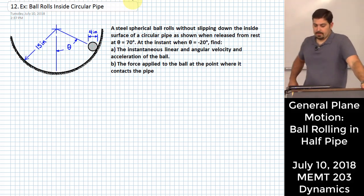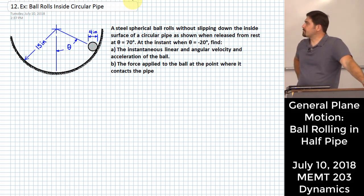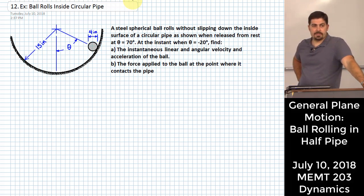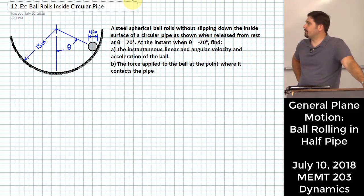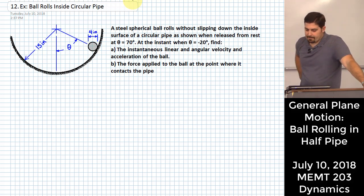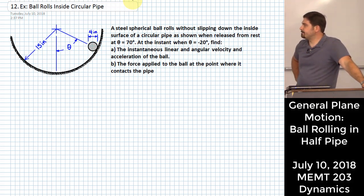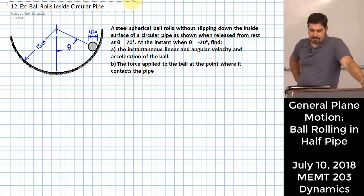We have a steel spherical ball rolling inside a half pipe without slipping. It's released from rest at a position described by angle theta, rolls down past center, and back up on the other side to a new angle of negative twenty degrees. We want to find the instantaneous linear and angular velocity, the linear and angular acceleration, and the force between the ball and the pipe surface at that point.